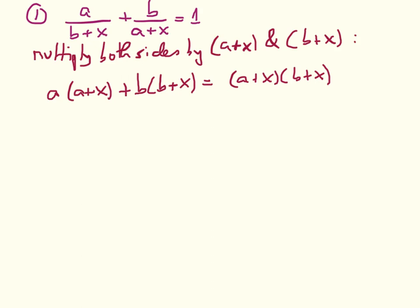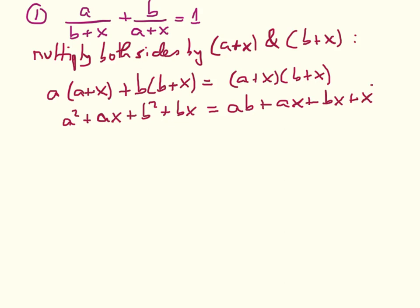Now we expand both sides. On the left we get a² + ax + b² + bx. On the right we get ab + ax + bx + x². When we look at this we see that there are some cancellations — in particular, on both sides we have an ax, so they cancel. The only surviving x term is the x².